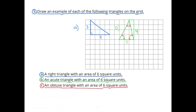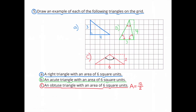C: an obtuse triangle with an area of 6 square units. It's a triangle with an area of 6 square units. The only difference is, the angle needs to be larger than 90 degrees. The obtuse triangle that I drew has a base of 6 and a height of 2.